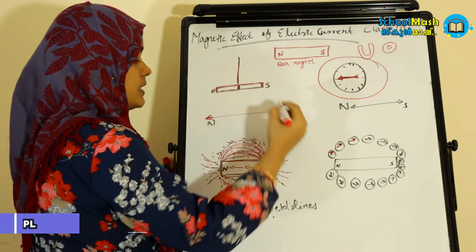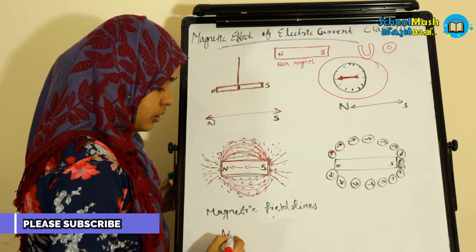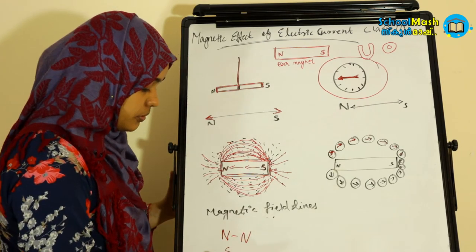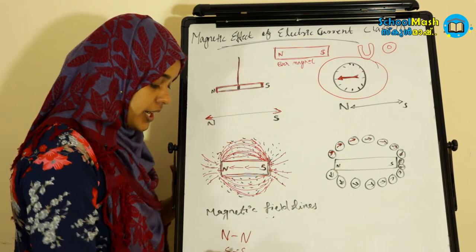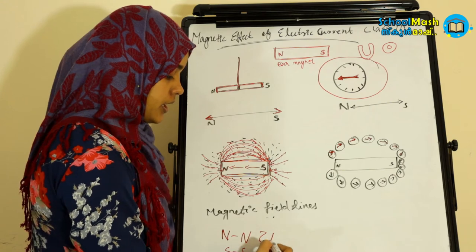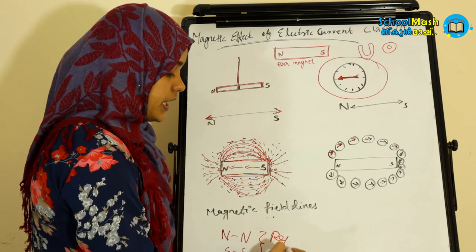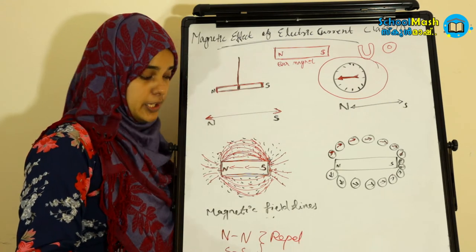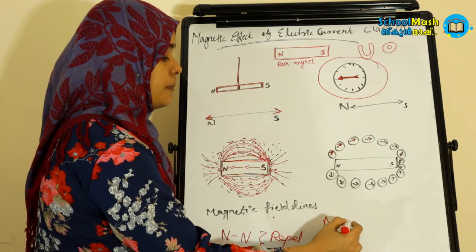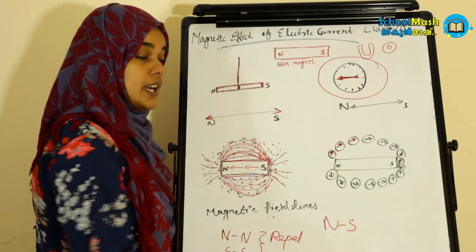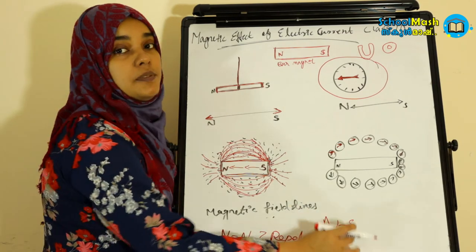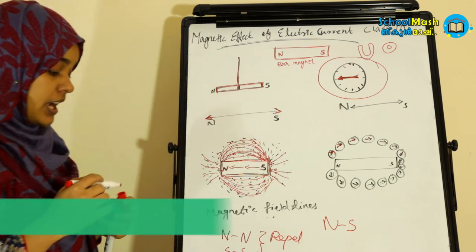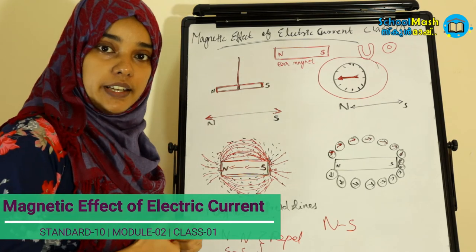The two North Poles are different — North to North poles repel. South to South poles also repel. These two like poles repel. Opposite poles are different — North Pole and South Pole attract each other with a force of attraction.